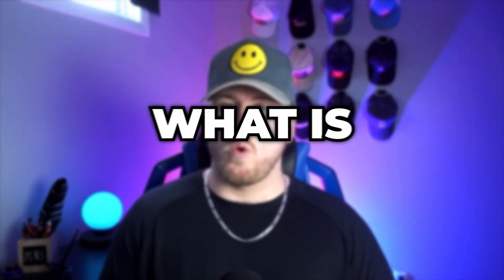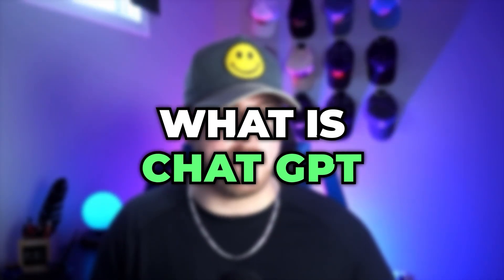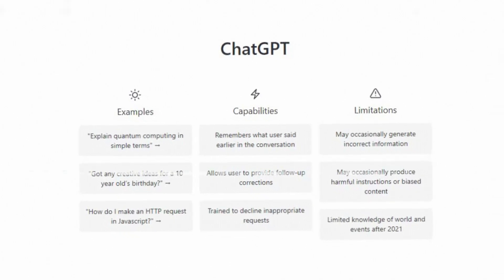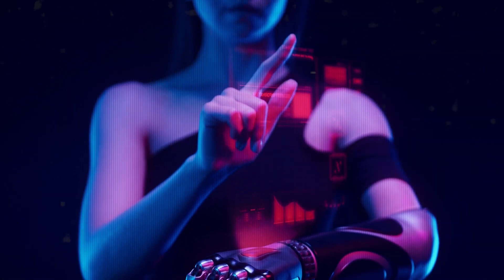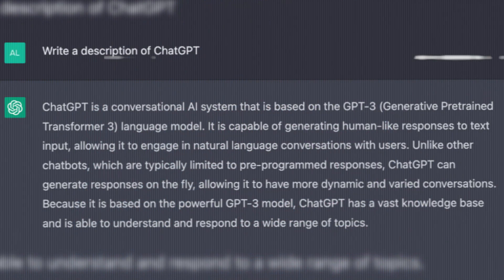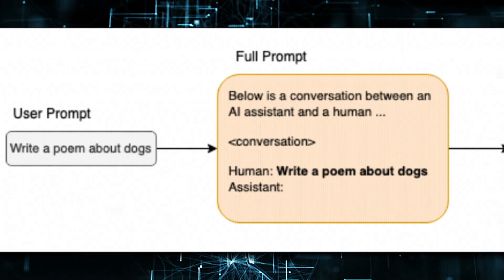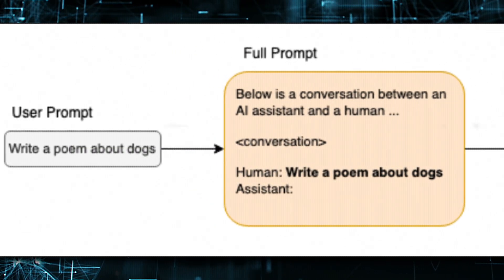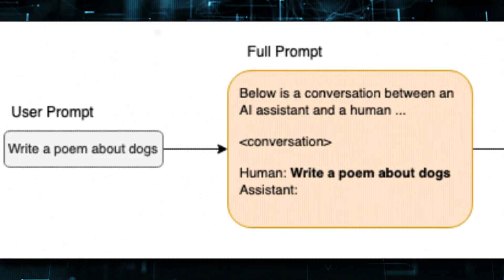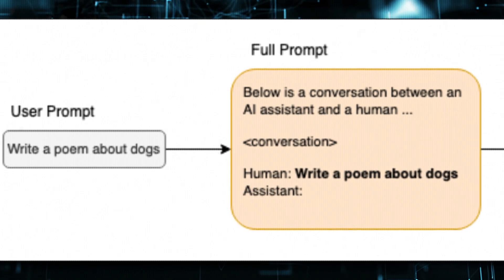Before I can show you how to create a custom version of this technology, let me first show you what exactly this technology is. So what is ChatGPT? It's just a fine-tuned, friendlier version that allows people to interact with the GPT-3.5 model easier and more effectively. You create a prompt or command like 'write a poem about dogs,' and it outputs a poem about dogs.